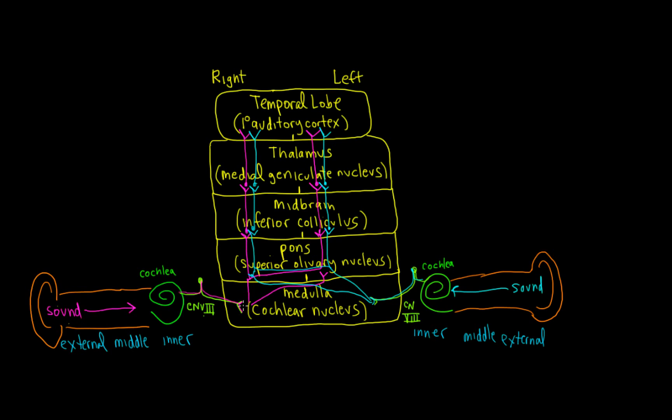Once we get past the cochlear nucleus, everything is bilateral. We can see there's some crossing at the level of the medulla.